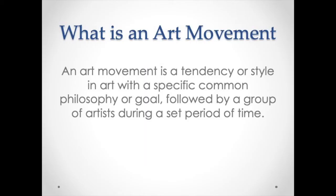Let's begin by talking about what an art movement actually is. According to this definition, it's a tendency or style within a specific common philosophy or goal, and it usually happens in a set time period and by a certain group of artists. Art movements are essentially a modern system of categorizing art, created by art critics and historians who wanted to look back in time and give each period a specific movement name. Art movements seem to be a western art phenomenon — you don't see it with eastern or other cultures. Art movements really help viewers critique and understand art in context, comparing similar pieces of work to one another.